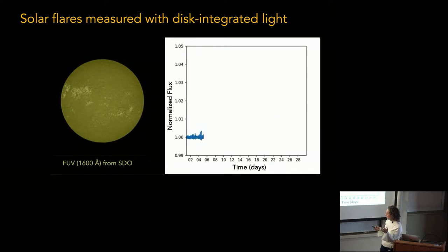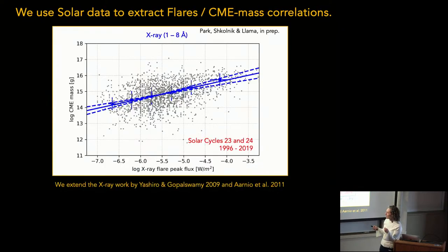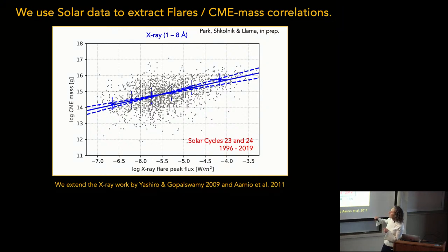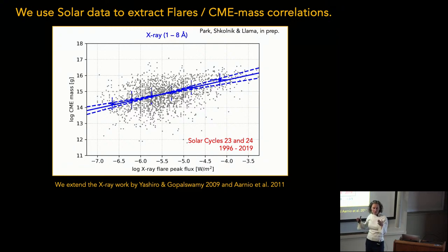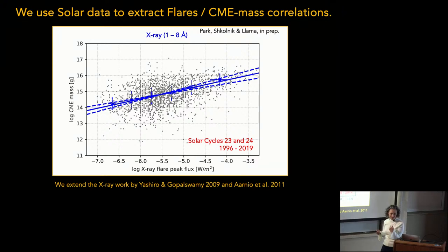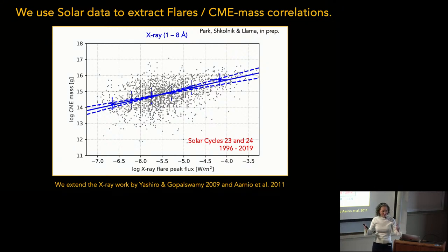This is work led by Nury Park, a student in my group back at ASU. We get a nice correlation between flare peak and CME mass in X-ray — built off some previous work, now with two solar cycles. The scatter is huge, but it's giving us something: if we have enough flares, we can start making some constraints on the otherwise completely unconstrained parameter space of CMEs.